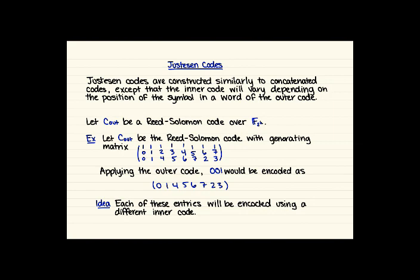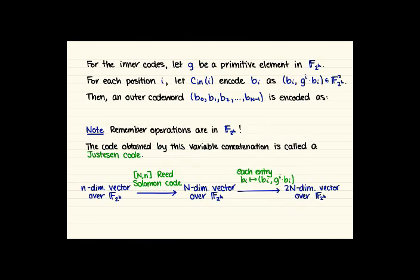And now for each entry of this, we're encoding using a different inner code. So like 0 is going to be encoded using one inner code, 1 a different one, 4 a different one. So each entry is encoded using a slightly different inner code. The way this inner code works is that we take a primitive element g in F2 to the k. This primitive element g is fixed for this entire code. And for each position i, our inner code encodes bi as bi is the first entry, and then g to the i times bi. And remember, all of these operations are happening in F2 to the k.